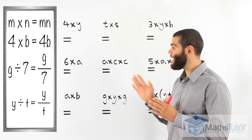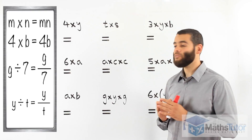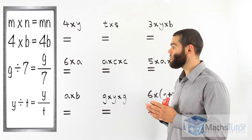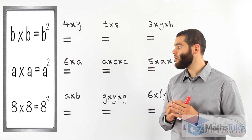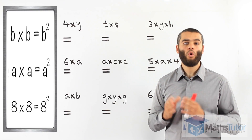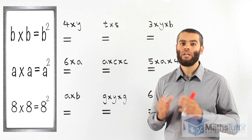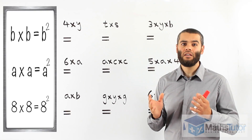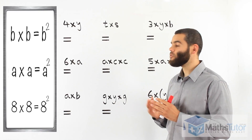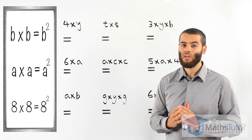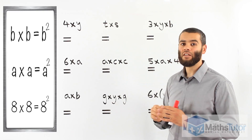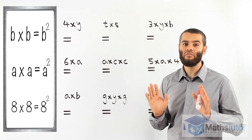Y divided by T — we write it as Y over T. And one of the last rules: B times B equals B squared, or A times A equals A squared. It's like saying 8 times 8 equals 8 squared. The same rule applies in algebra. Now that we've understood the basics — the theory — let's start applying it to some examples. You'll see it is very easy.